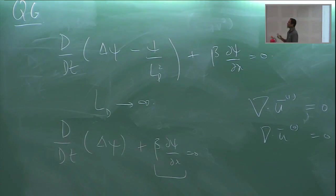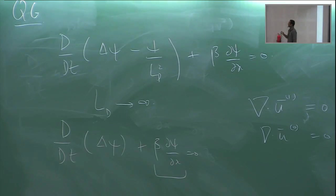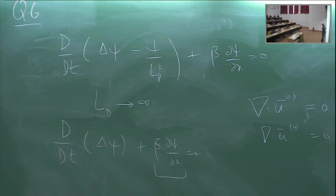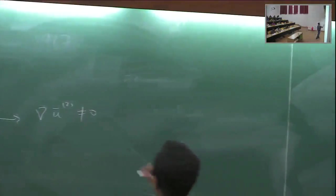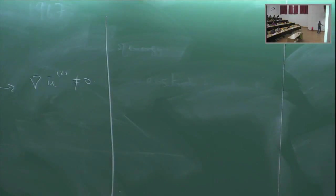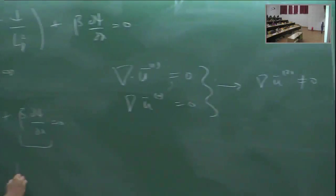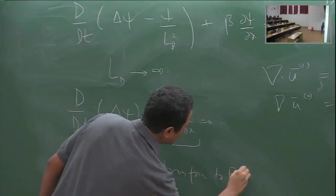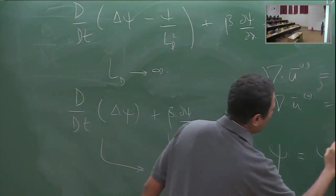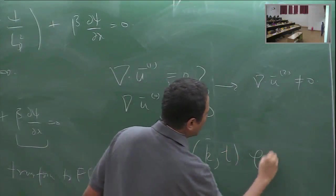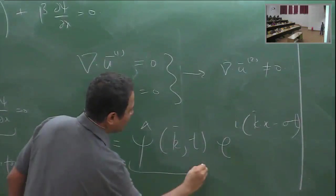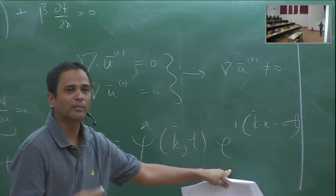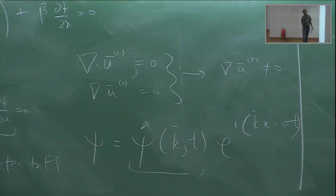We write this equation in Fourier space. We take psi equal to some Fourier amplitude psi(k, t) times an exponential. The only thing to worry about is the nonlinear term, which becomes a convolution in Fourier space since u = -partial(psi)/partial(y).